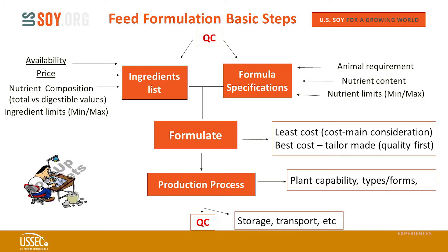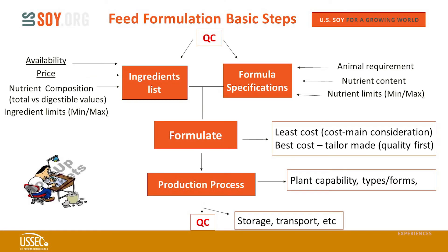In terms of steps, first do your ingredient listing — whatever raw materials you want to use or have in the warehouse. You want ingredients available year-round rather than materials you need to change weekly. After that, you need to know their prices, since you'll be asked to produce the cheapest possible formula. After having all raw materials and prices, you individually input their nutrient composition — ideally including both total and digestible values of nutrients. You can also put ingredient limits — minimum and maximum amounts for each ingredient.